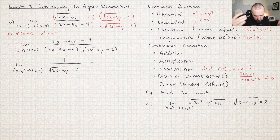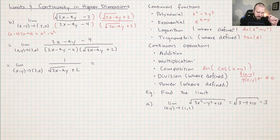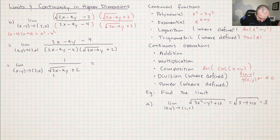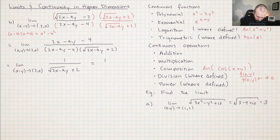After simplifying this expression, I am no longer violating the divide-by-zero rule, and I'm dealing with continuous functions again, so I can just plug in. What is this going to be? Two times two minus zero — so that's the square root of four plus two. In the entire denominator I'm just getting a four. So this whole value is one fourth.